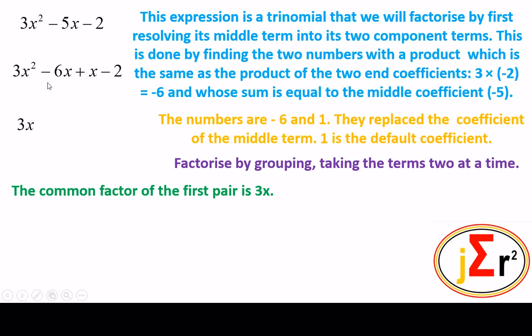We will also go straight ahead and divide each of these terms by the highest common factor, bearing in mind that we are factoring three x squared. Three x into x squared is x. Also, three x into negative six x, the x's will cancel and three into negative six is negative two. So that term will be x minus two.